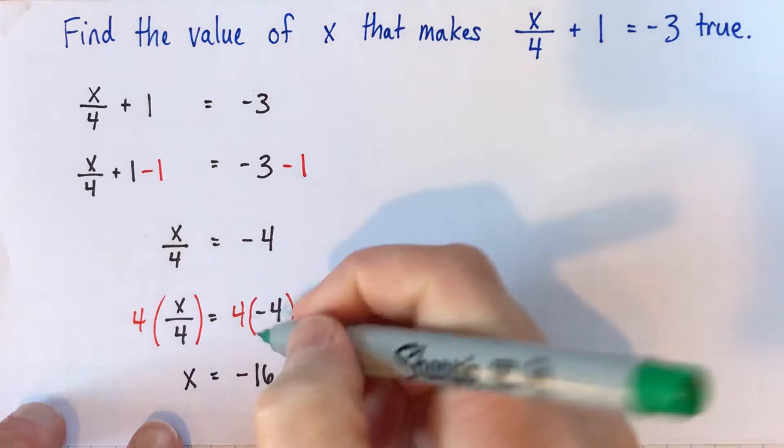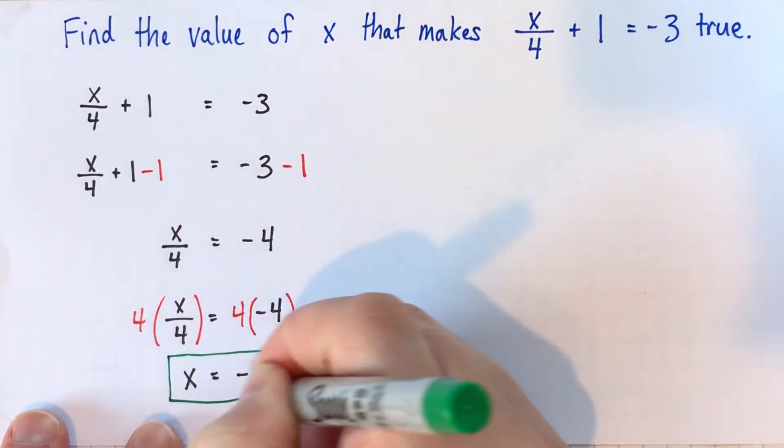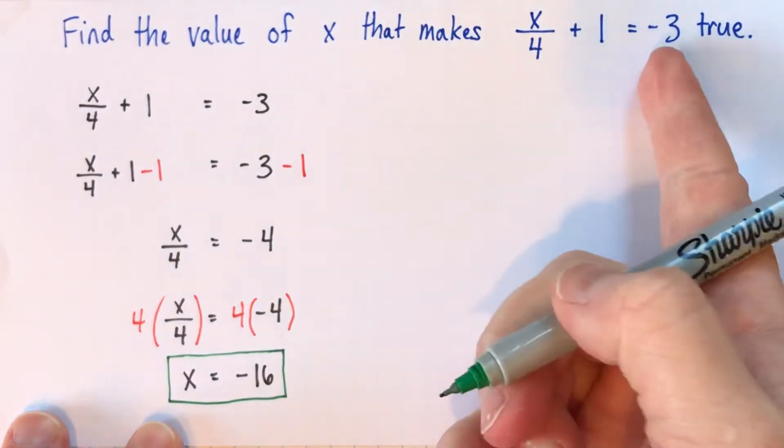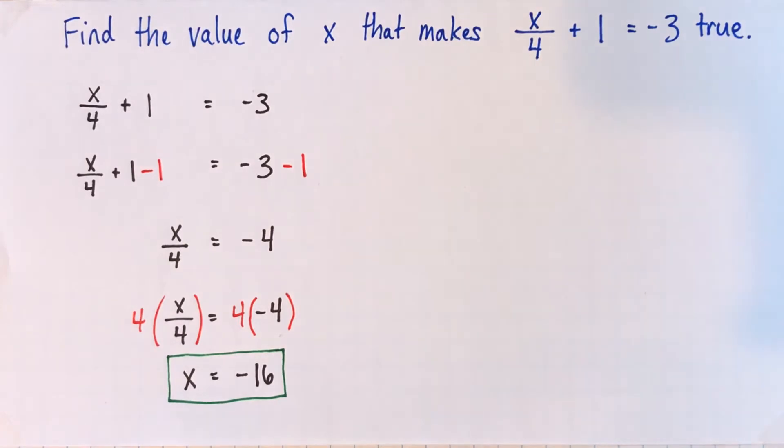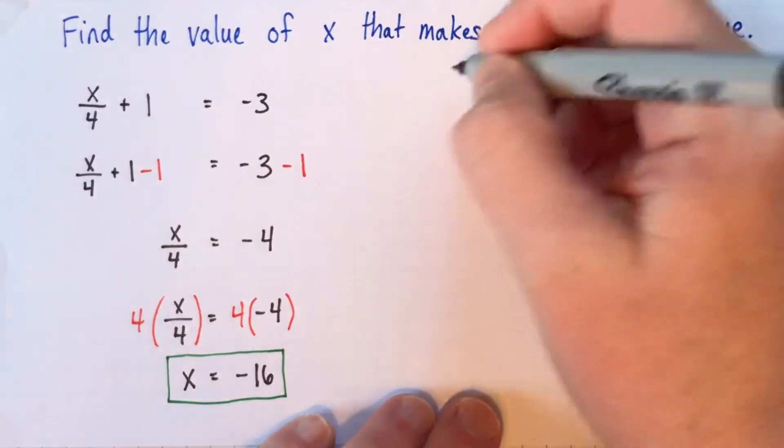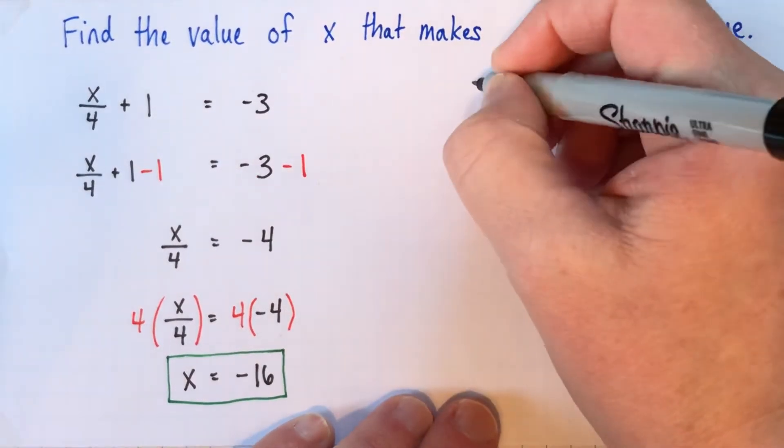Alright, so there's our solution. That's the value of x that we think makes these two things true. And I'm just going to do a nice formal check here. Just sort of review how we can check this in a nice way that's logically clear.